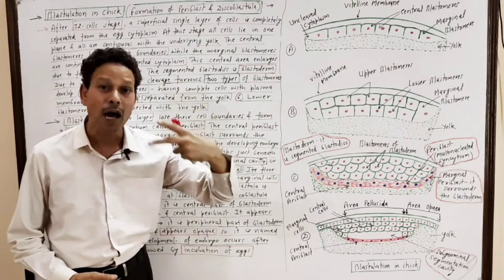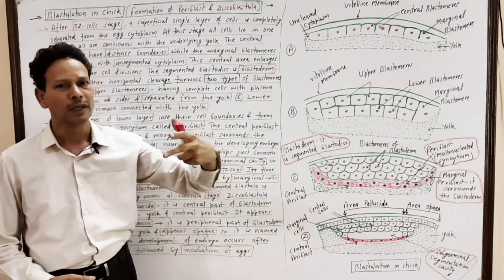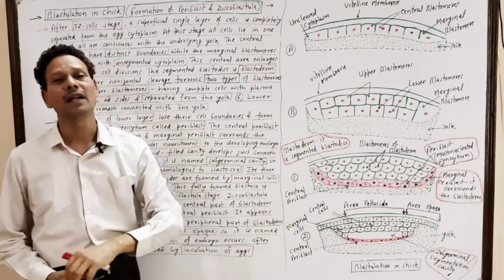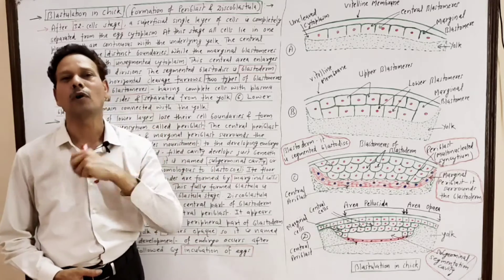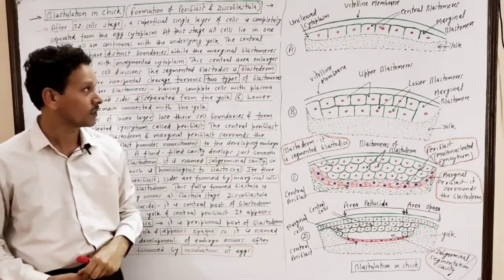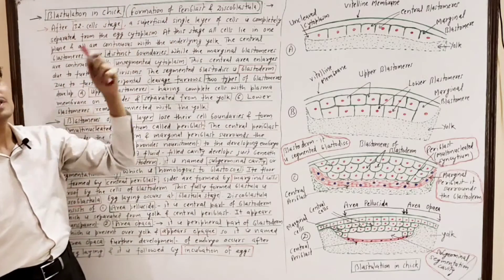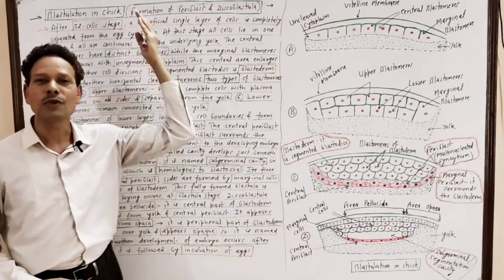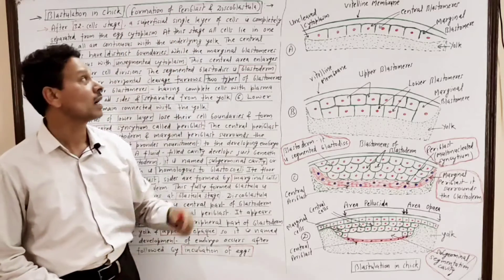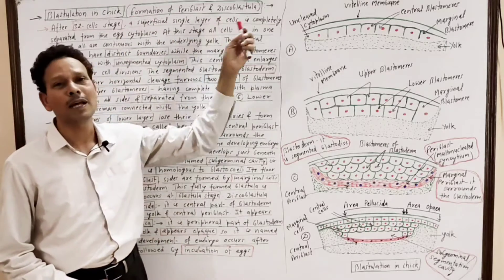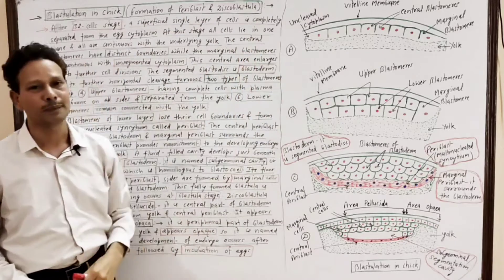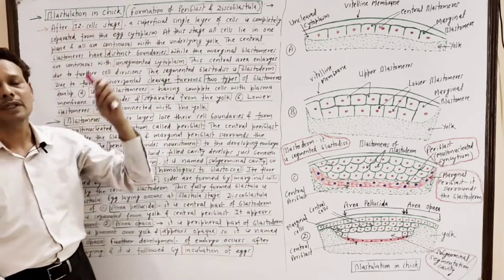This cleavage is partial and incomplete. It is discoidal because it occurs in the very small active cytoplasmic disc. The process of blastula formation — blastulation in chick — and the formation of pariblast and disco blastula are all topics we will cover in this lecture.